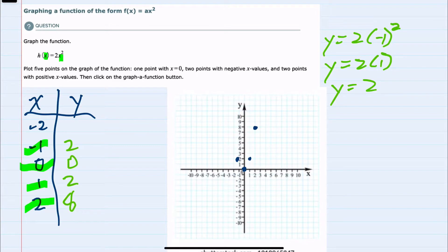Plotting that on our graph, we can then move to the last point, which is negative 2. Substituting in, we have y equals 2 times negative 2 squared.